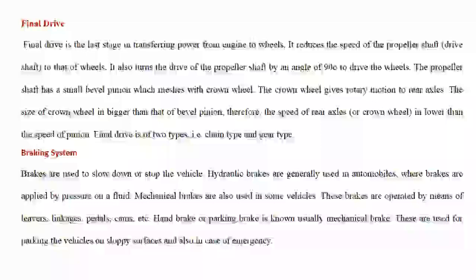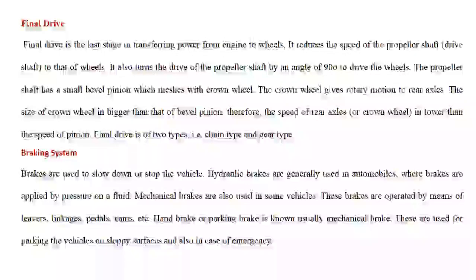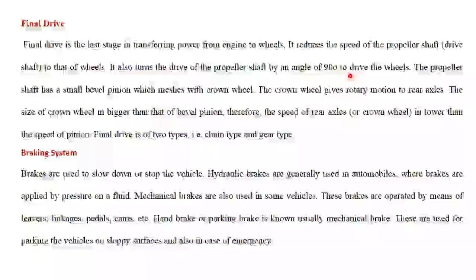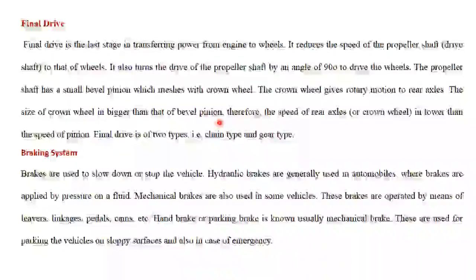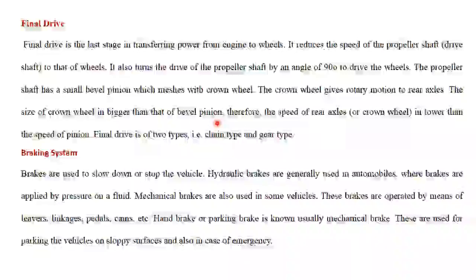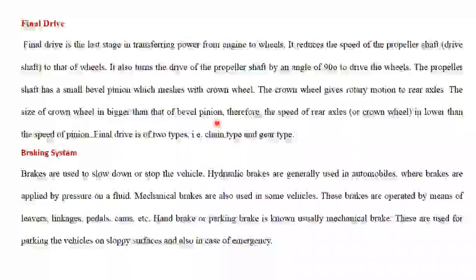The final drive is the last stage of transmitting power from the engine to the wheels. It reduces the speed of the propeller shaft to drive the wheels. It also turns the drive of the propeller shaft at a right angle to the drive of the wheels. The propeller shaft has a small bevel pinion which meshes with the crown wheel. The crown wheel gives rotary motion to the rear axle. Since the crown wheel is bigger than the bevel pinion, speed reduction is achieved in the final drive. The differential allows the driving wheels to turn at different speeds while taking turns.